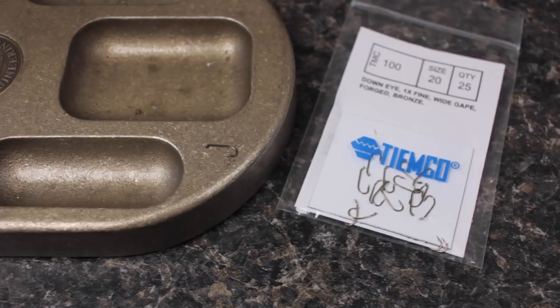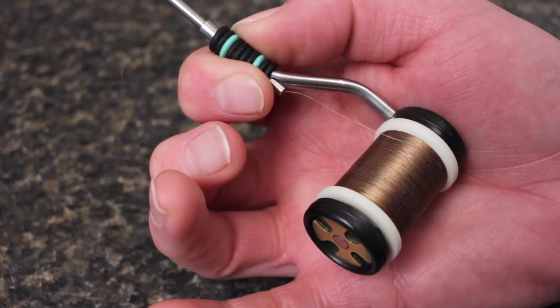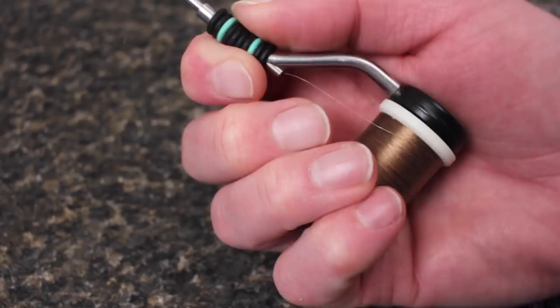Matt starts with a TMC 100 Dry Fly hook in a size 20 and after mashing the barb and securing the hook in his tying vise, loads a bobbin with a spool of 6.0 Olive Danville. Is it ever really loaded with anything else?